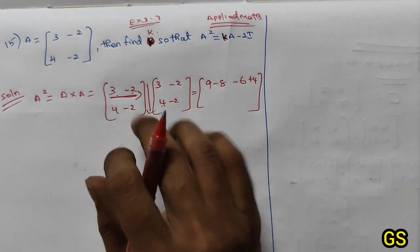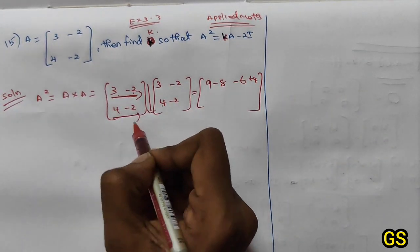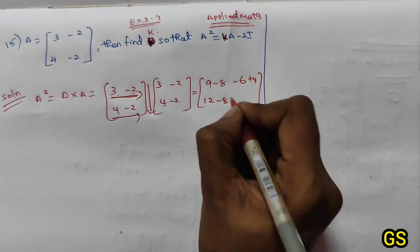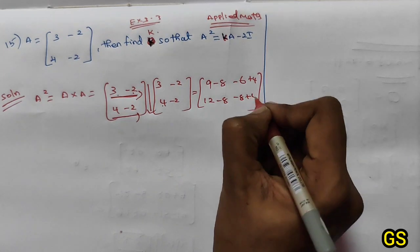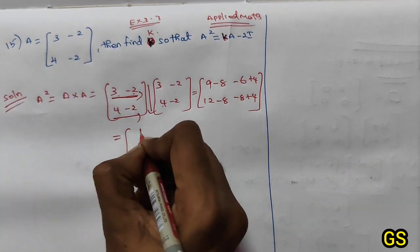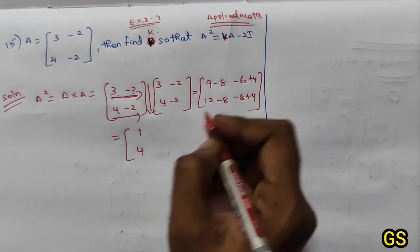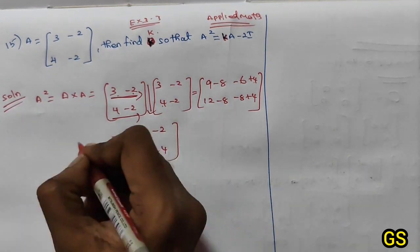Second row, first column: 4 times 3 is 12, then minus 8. Second row, second column: 4 times -2 is -8, 2 times -2 is 4. So 9 minus 8 is 1, -6 plus 4 is -2, then -4. This is A squared.